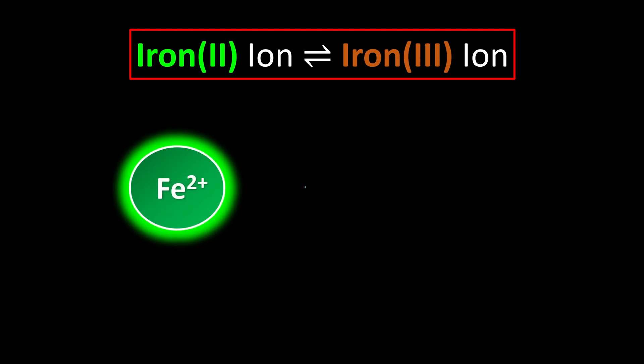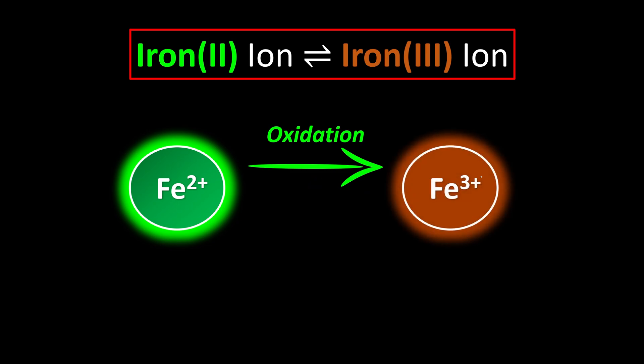Iron(II) ions will eventually undergo oxidation, which will lose one of the electrons to become iron(III) ions. This is why you see it become more and more positive. Meanwhile, when iron(III) ion wants to go back to become the iron(II) ions, it will eventually receive one electron which undergoes the process of reduction.